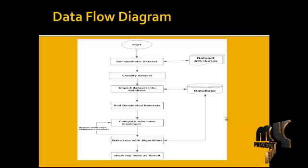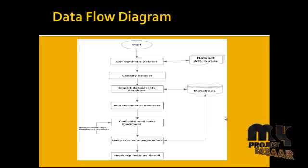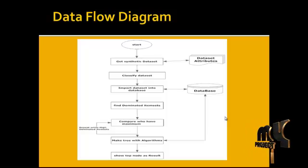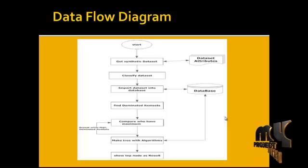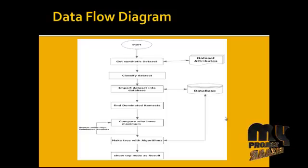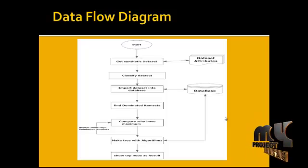We export the dataset into the database for further processing. After the transaction dataset is fed into the database, the dominated item set will be found. For example, results will not be dominated by any other product sales, and the least minimum product sales rate will not be dominated by any other minimum rate. We determine the most dominant item set from the high utility transactional dataset.